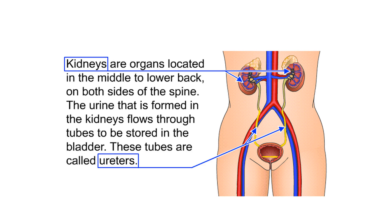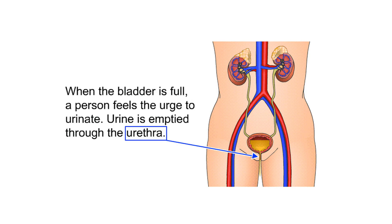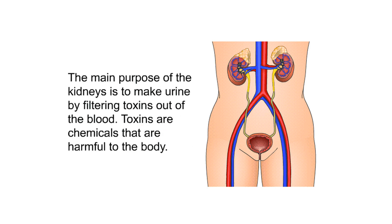The kidneys are organs located in the middle to lower back on both sides of the spine. The urine formed in the kidneys flows through tubes called ureters to be stored in the bladder. When the bladder is full, a person feels the urge to urinate, and urine is emptied through the urethra. The main purpose of the kidneys is to make urine by filtering toxins out of the blood.